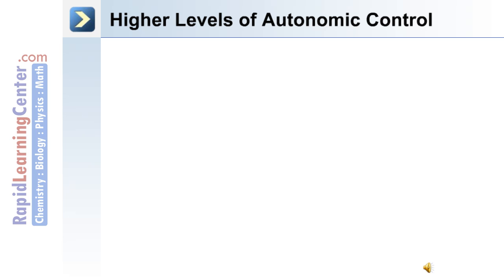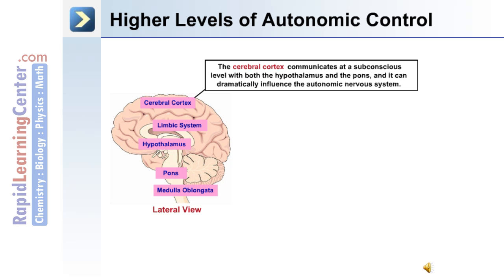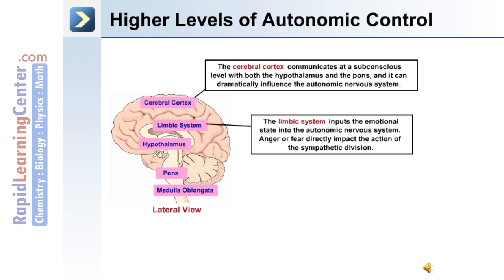The cerebral cortex communicates at a subconscious level with both the hypothalamus and the pons, and it can dramatically influence the autonomic nervous system. The limbic system inputs the emotional state into the autonomic nervous system; anger or fear directly impacts the action of the sympathetic division.